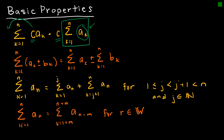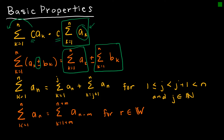My next property says that if you have the sum or difference — this works for plus or minus — of two series or sequences, then you can split those up. That will be helpful if I have some formula for each part. I can just separate them with a plus or minus, whatever I had in the original question, and it will make computation a lot easier.